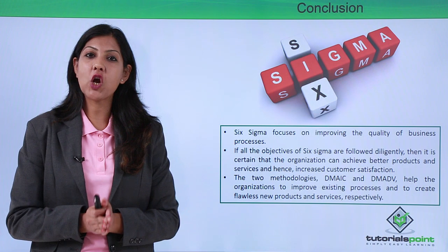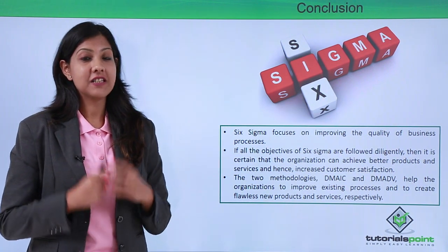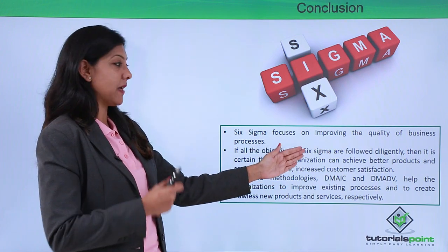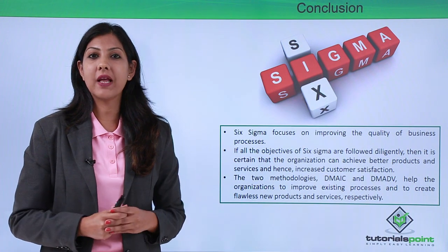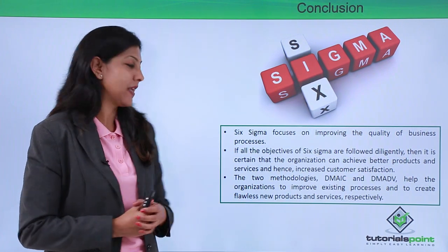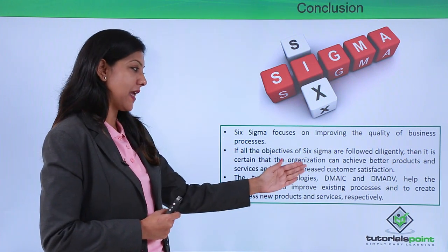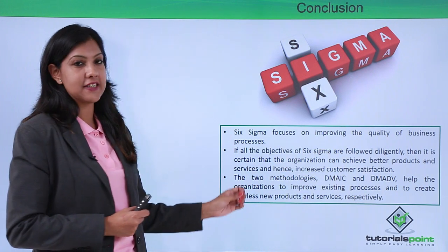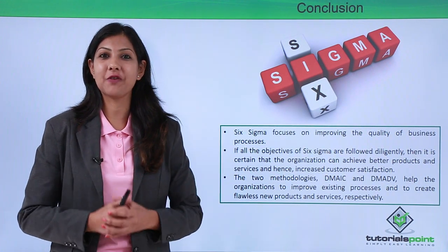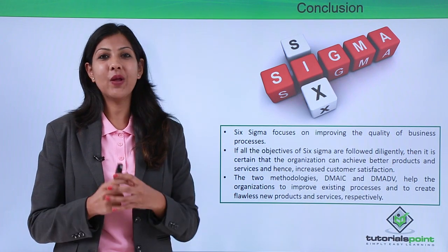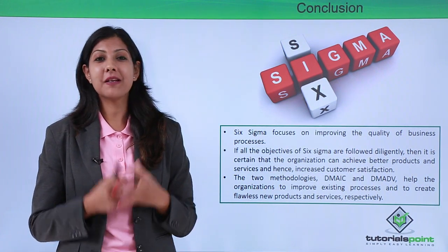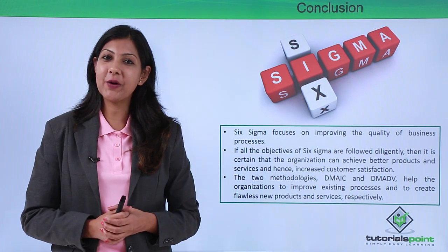To conclude this topic on Six Sigma: Six Sigma focuses on improving the quality of business processes. If its objectives are followed diligently, the company will do well — it will boost employee productivity, increase profits, and reduce time. The two methodologies discussed are DMAIC and DMADV, which help organizations improve existing processes as well as develop new ones to achieve the best quality and processes. I hope you have enjoyed this video on Six Sigma and found it informative. Keep watching more videos — thank you very much.